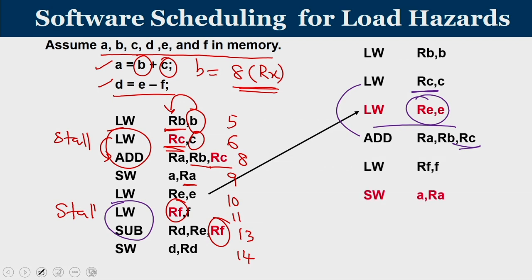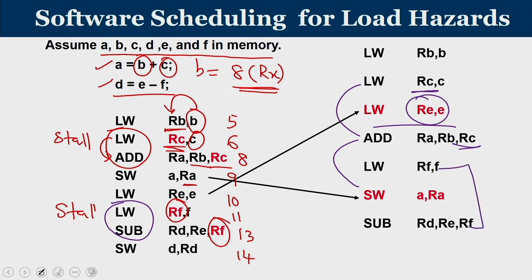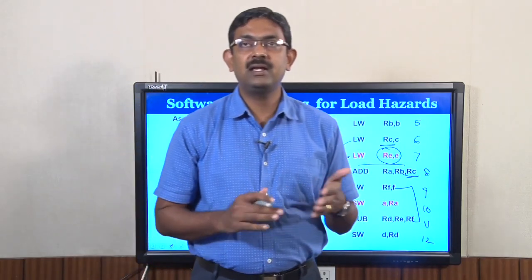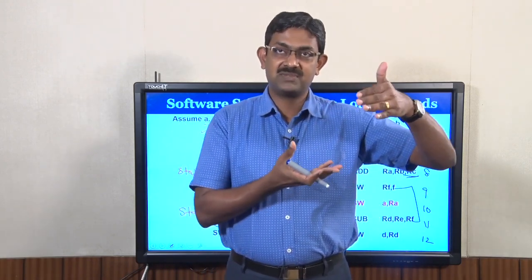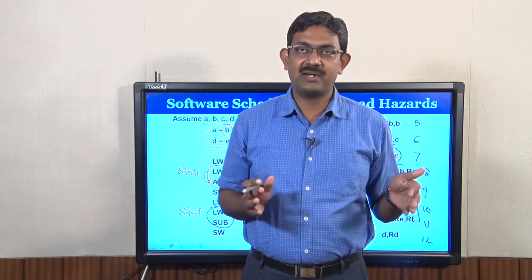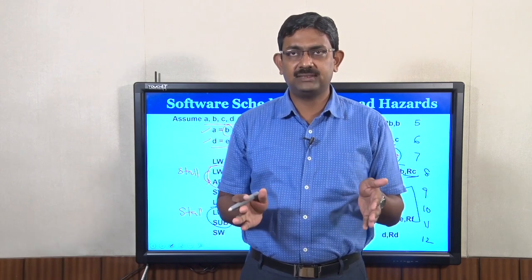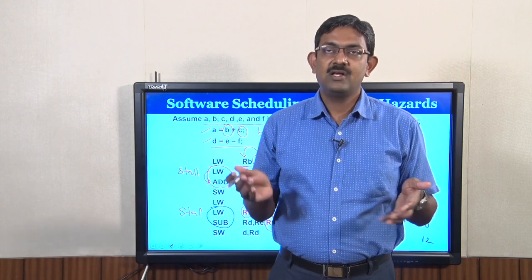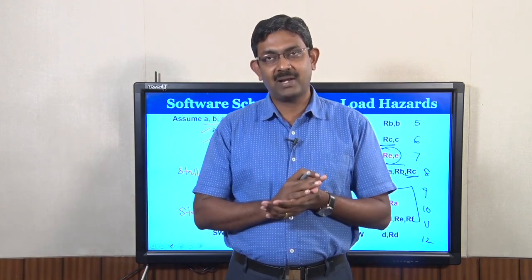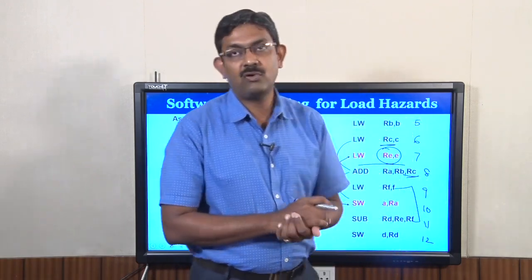In the rescheduled code, the store operation is also meaningfully placed between the dependent load and subtract instructions. Previously with two stalls the code took 14 clock cycles; now with scheduling all stalls are eliminated and it completes in 12 cycles. A little bit of hardware knowledge supplied to the compiler allows it to reschedule code and eliminate hazards — this is known as software scheduling for load hazards.